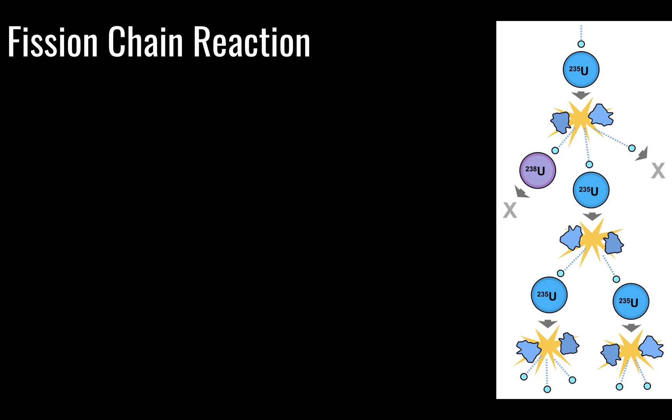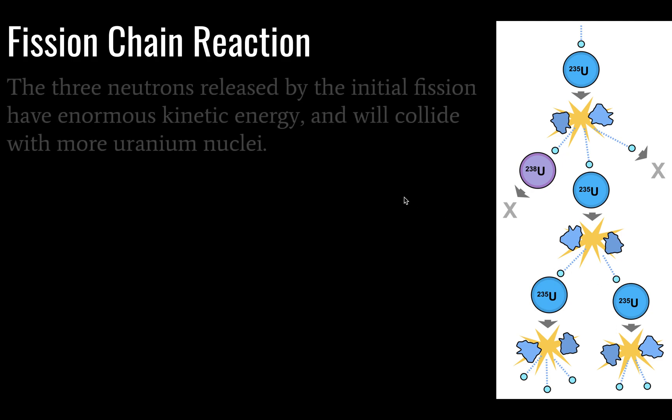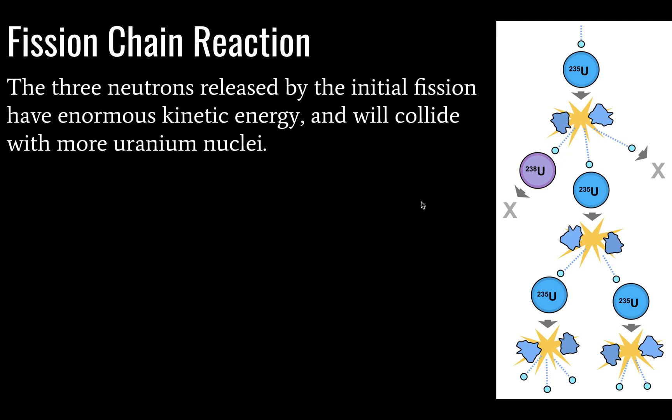So we're going to take a look here at a chain reaction. And here we see a number of isotopes that don't exactly match our previous example, but that's okay. We see a uranium-235 breaking into a couple of products here, releasing three neutrons. But what we should notice is that the number of neutrons here is going to increase dramatically.